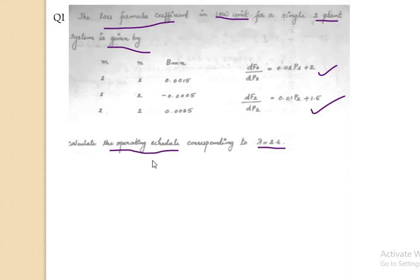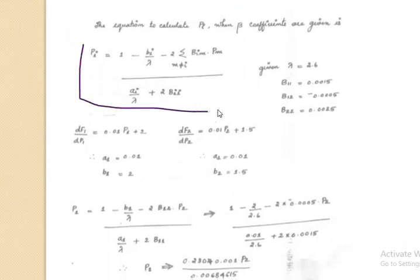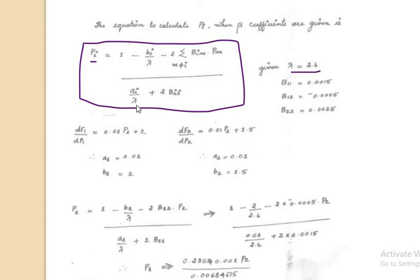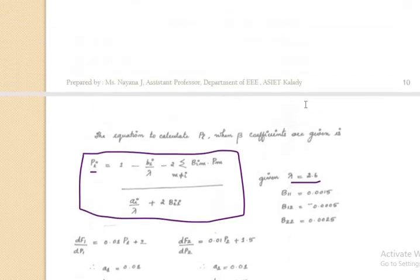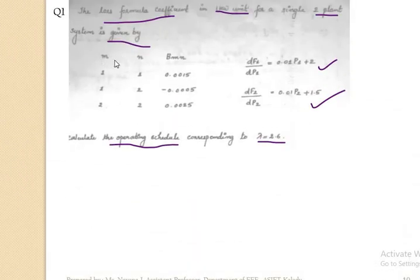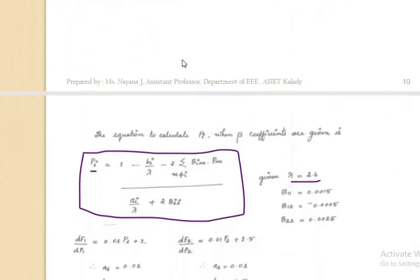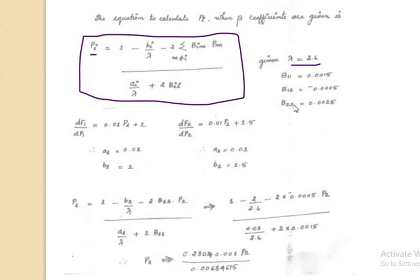How do we calculate P1? We have one equation for that — the equation for calculating generated power Pi. Lambda is given as 2.6. Also given are M, N, and B_MN values. When M=1, N=1, that term is B11; when M=1, N=2, it is B12; when M=2, N=2, it is B22. So B11, B12, B22 are all given. Additionally, dF1/dP1 and dF2/dP2 are given.